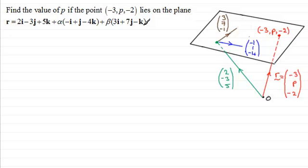Now, if a point lies on this plane, it must satisfy the equation. There must be some value of α and β that take us to this point, given by this position vector (-3, p, -2). So all we need to do is substitute this in for the position vector r, compare components to get the values of α and β. That will involve solving simultaneous equations.